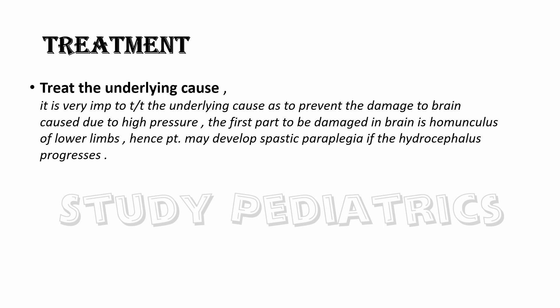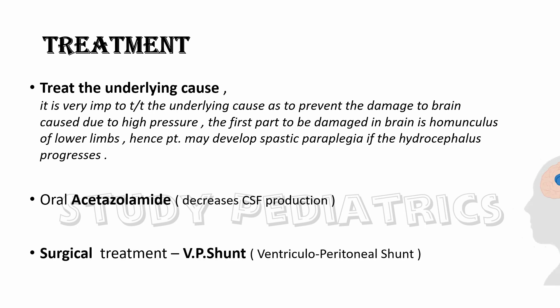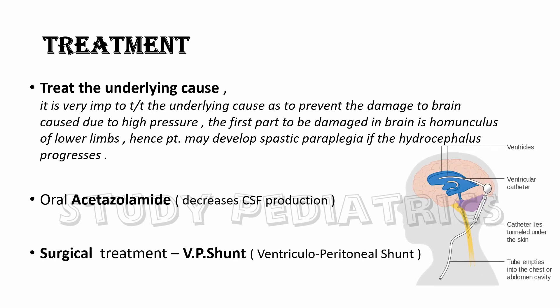For treatment, it is very important to treat the underlying cause to prevent brain damage due to high pressure. The early part of the brain to be damaged is the homunculus of the lower limbs, so the patient may develop spastic paraplegia if hydrocephalus progresses. Medical treatment includes oral acetazolamide, which decreases CSF production, and the surgical treatment is a VP shunt — ventriculoperitoneal shunt — as shown in the diagram.